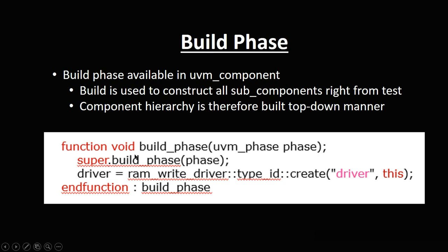The factory create syntax uses the handle, the actual class name, and scope resolution to call create. This is the benefit of UVM overriding — the three concepts in the factory are: registration, construction, and overriding. This applies to sequence items and sequences as well.